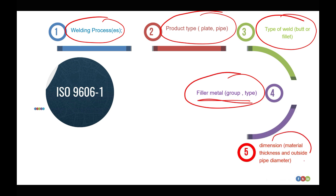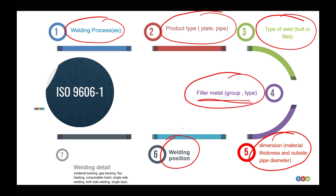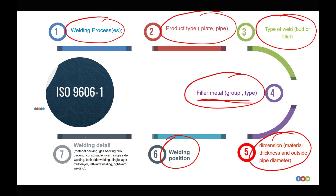We also have dimension, which means the material thickness for a plate or the outside diameter for a pipe. Then we have welding position, and finally other variables which are the welding details — for example, material backing, gas backing, single layer or multi-layer welding, leftward welding, or rightward welding.